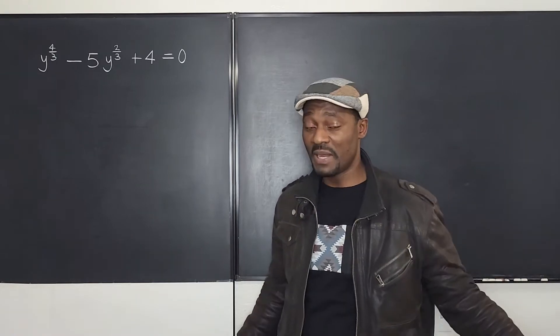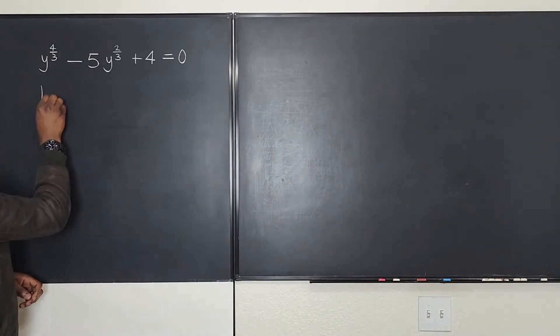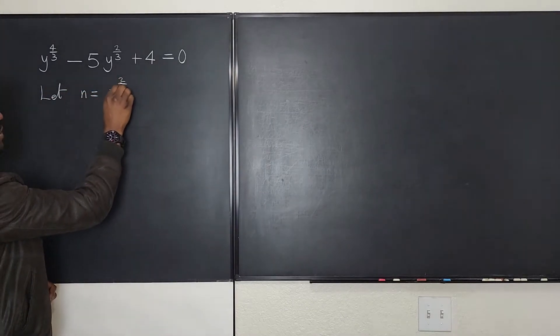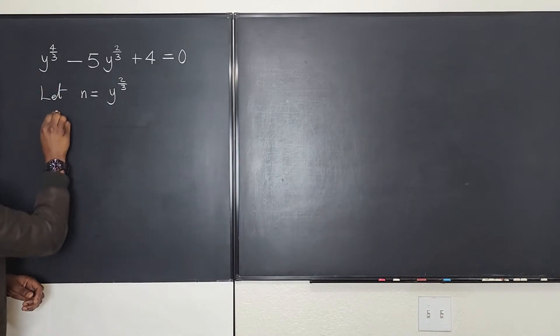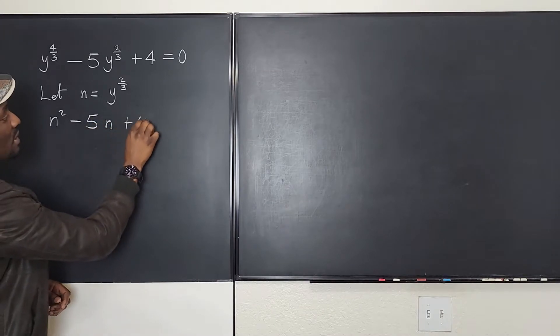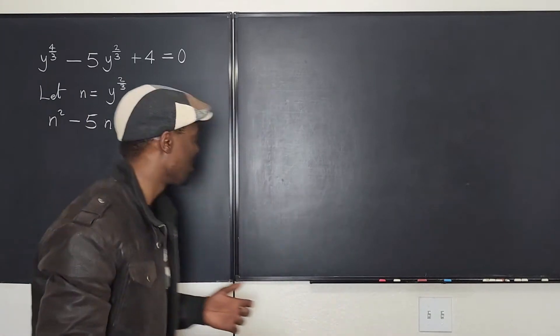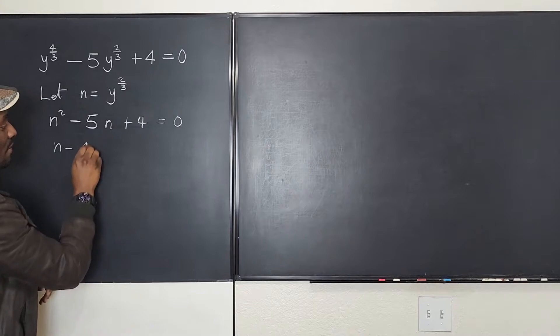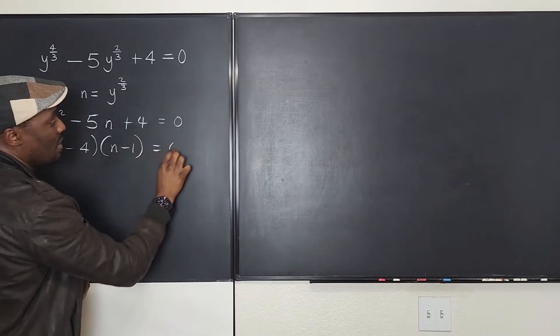So I'm going to just solve it based on the explanation I gave. I'm going to say let n be equal to y to the two-thirds so that I can write this as n squared minus 5n plus 4 equals zero. Because I know how to factor quadratic equations, I'm going to factor this into n minus 4 and n minus 1 equals zero.